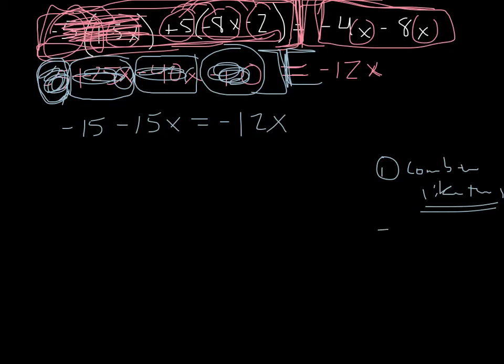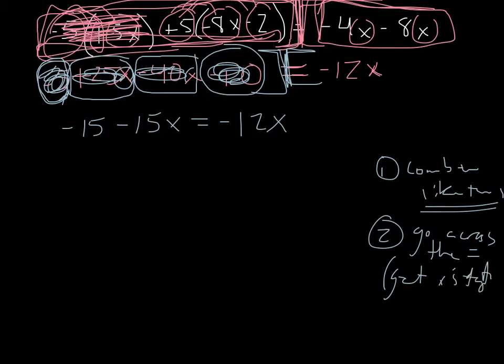Next step: go across the equal sign. We're going to get our x's together — also called get x's together. It might be y's or a's or j's depending on your equation. We've got to do the opposite to get it over there. What's the opposite of subtracting 15x? Adding 15x. So we add 15x to both sides.